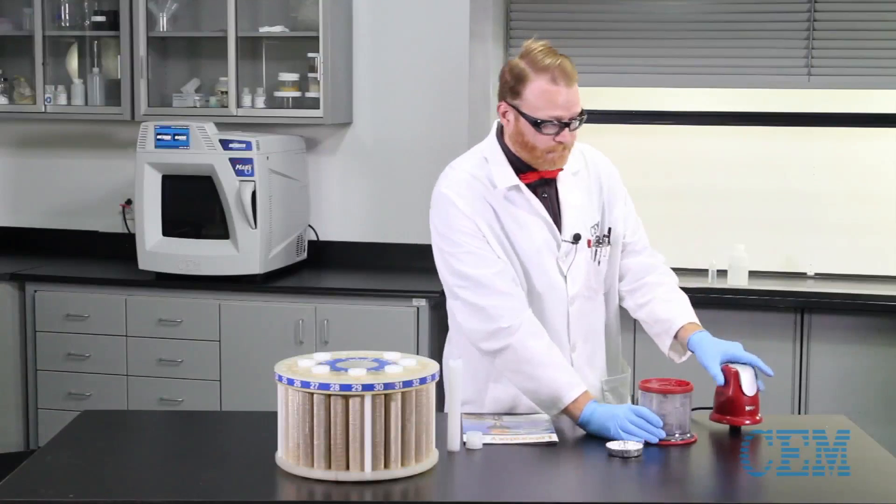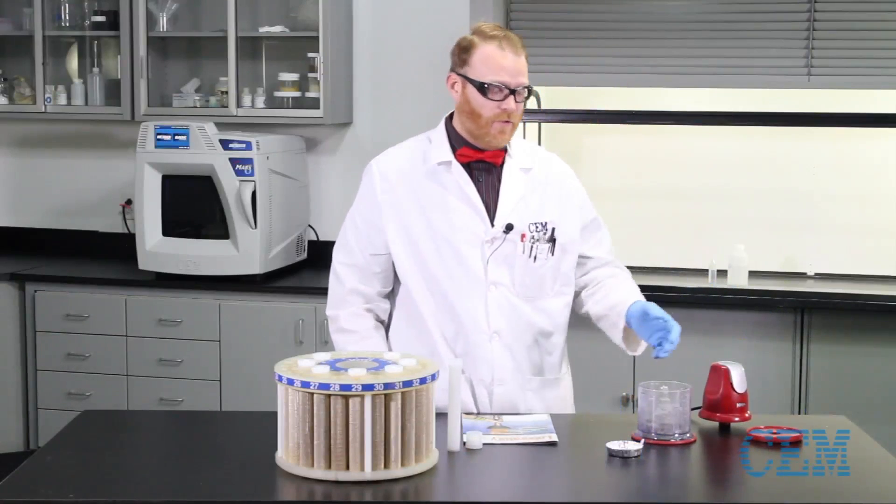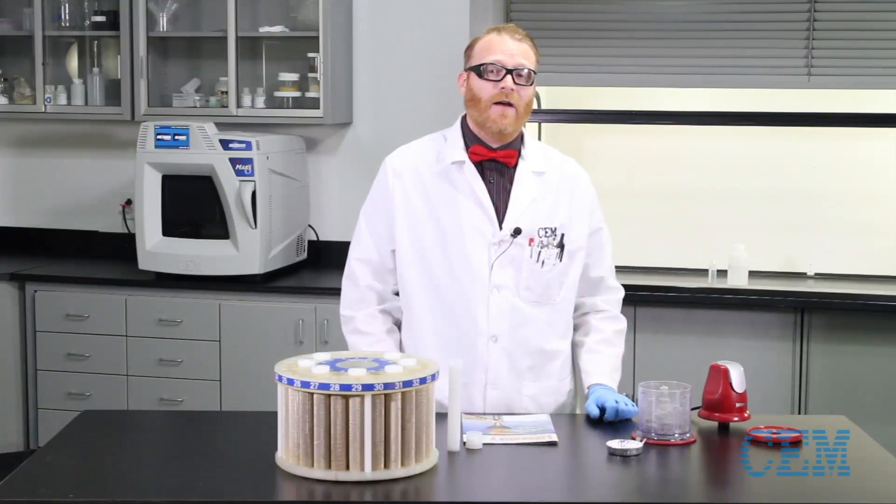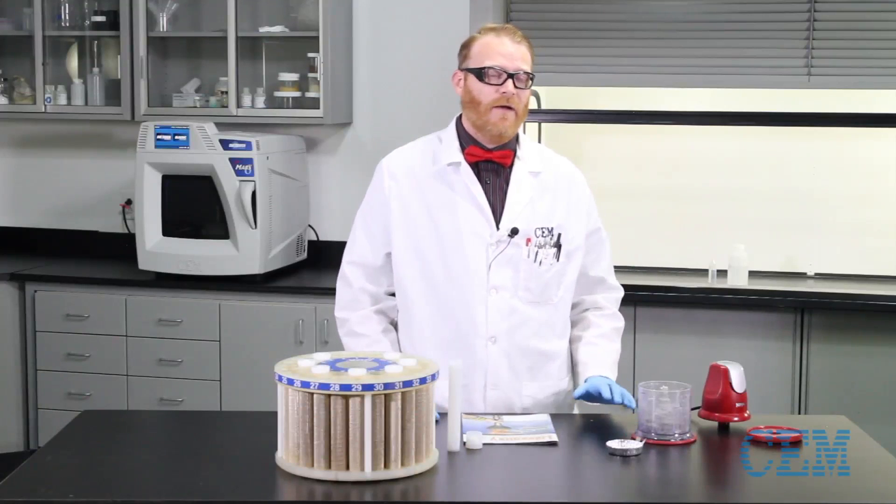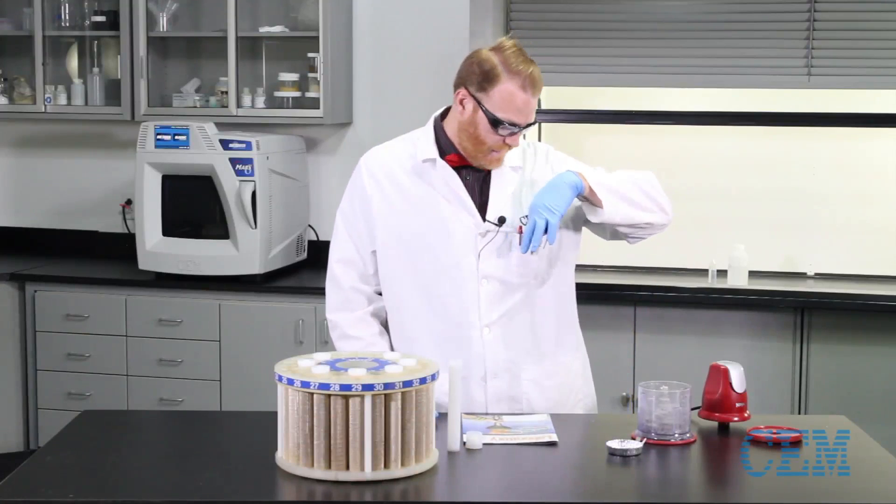So now we're going to open this up. Normally what we would do is, for an analytical sample, we would take this, put it in our aluminum pans here, dry it in a hot air oven at 100 degrees Celsius for about a couple of hours. We're not worried about that. I'm just going to take a sample and digest it.